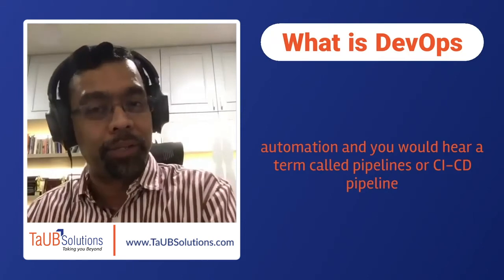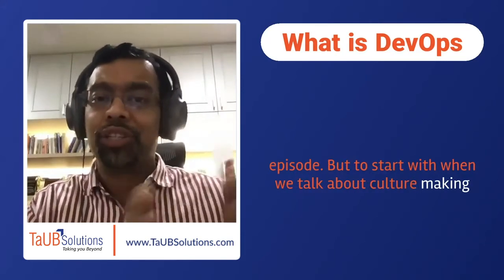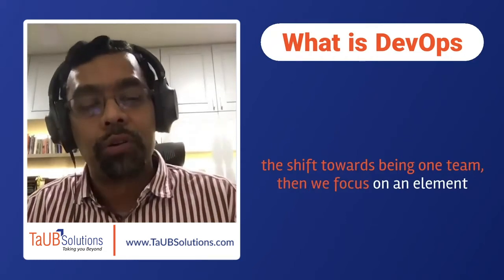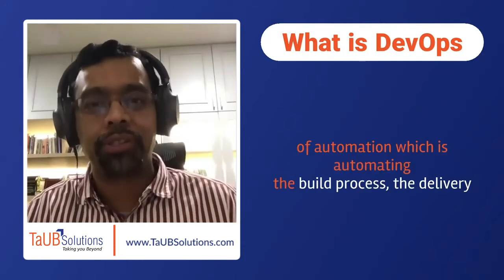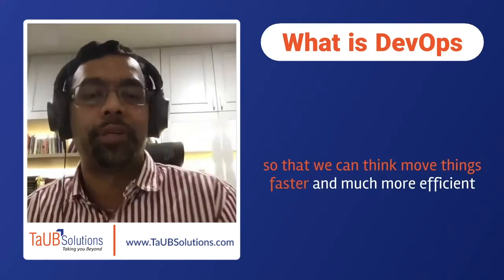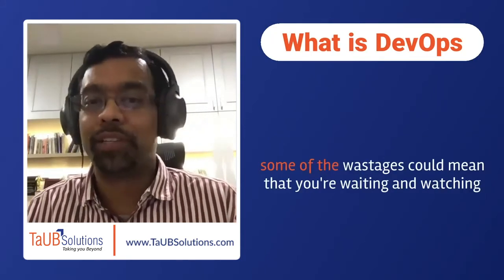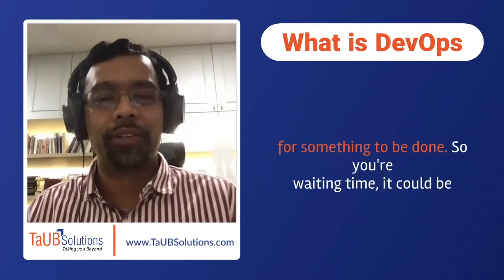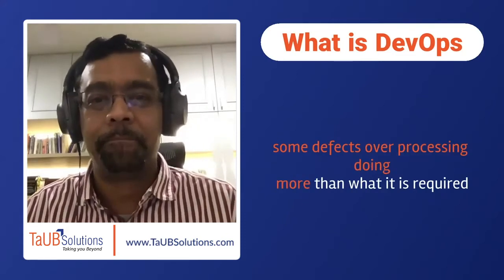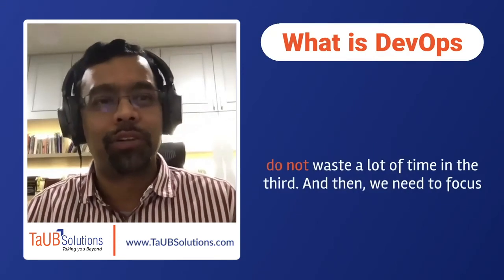We are also big fans of automation, and you would hear a term called pipelines or CI/CD pipelines — we will address those in the next episode. When we focus on automation, it means automating the build process, the delivery process, the release management process, and the operations process, so we can move things faster and more efficiently. We also apply lean — how do we reduce wastages? Wastages could mean waiting time, defects, over-processing, or doing more than what is required. Lean focuses on ensuring we move from left to right faster and efficiently without wasting time and effort.